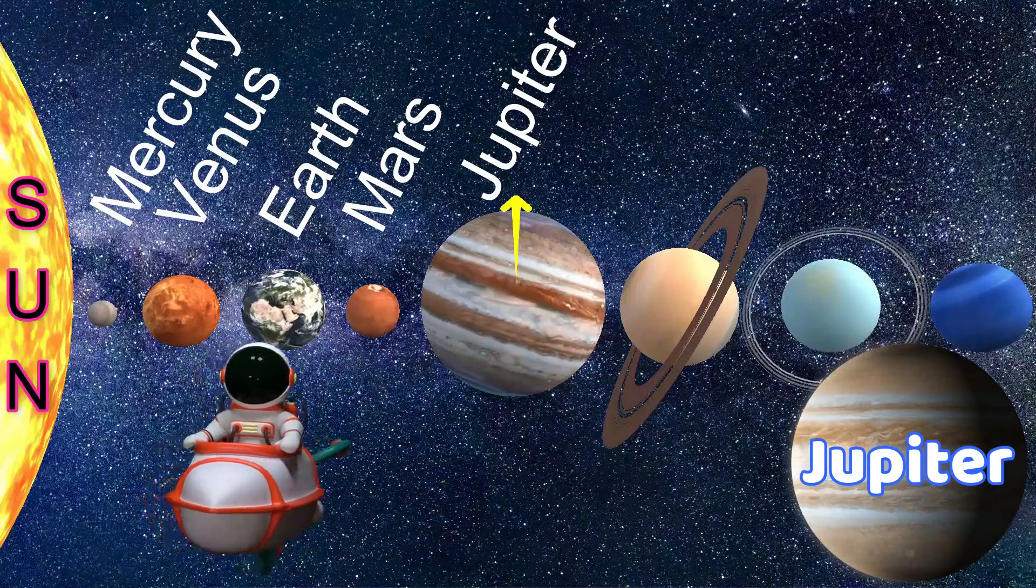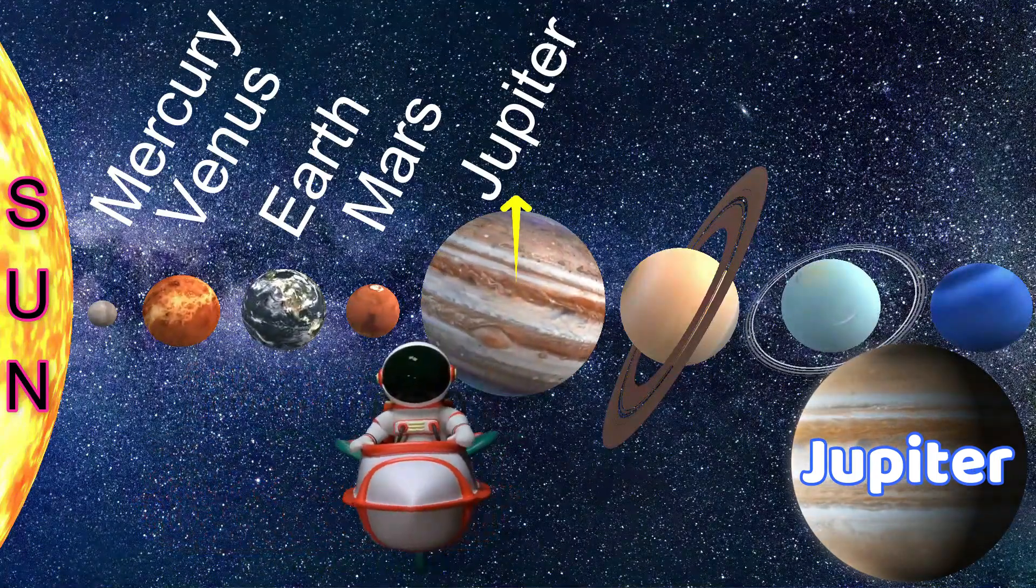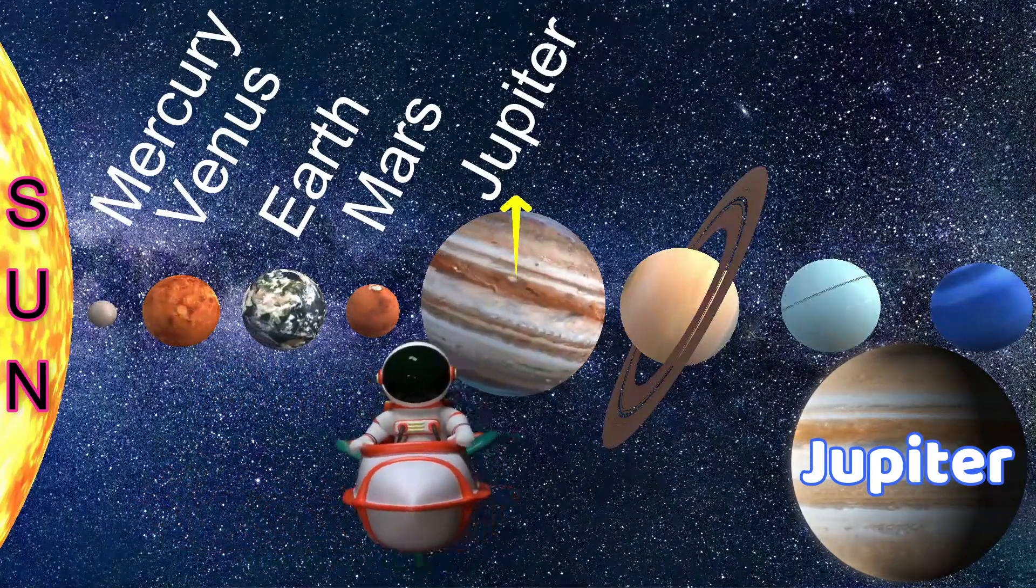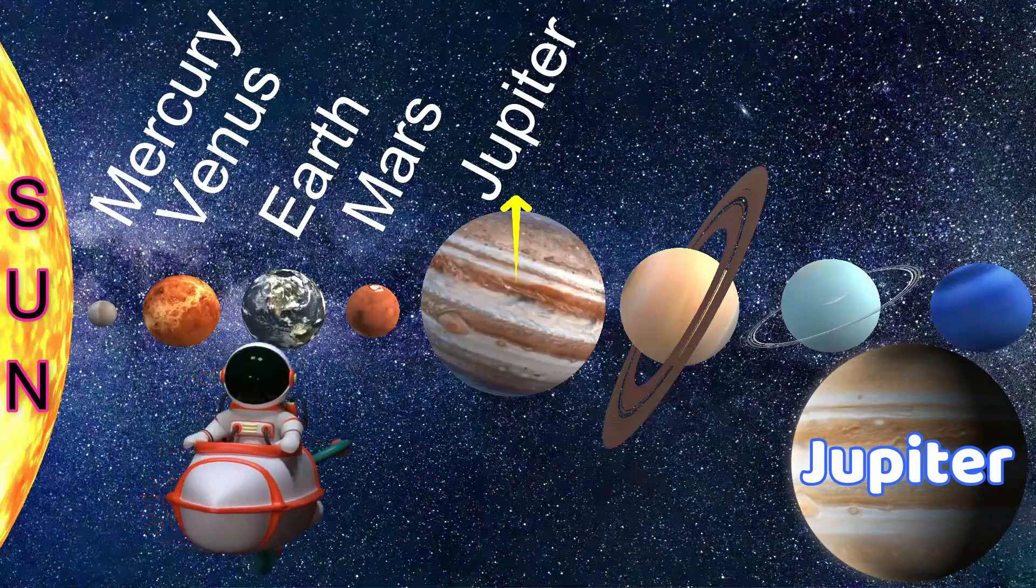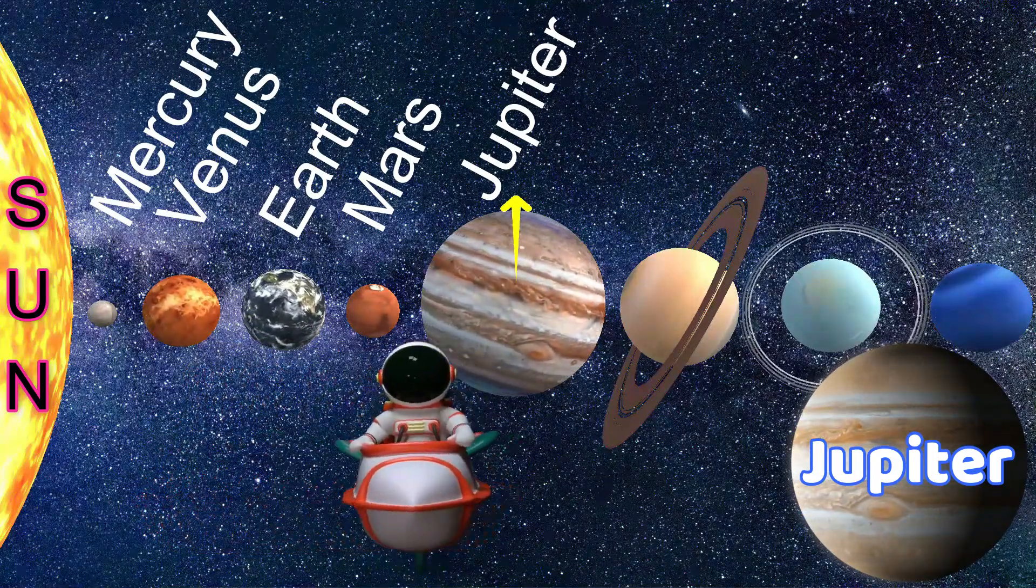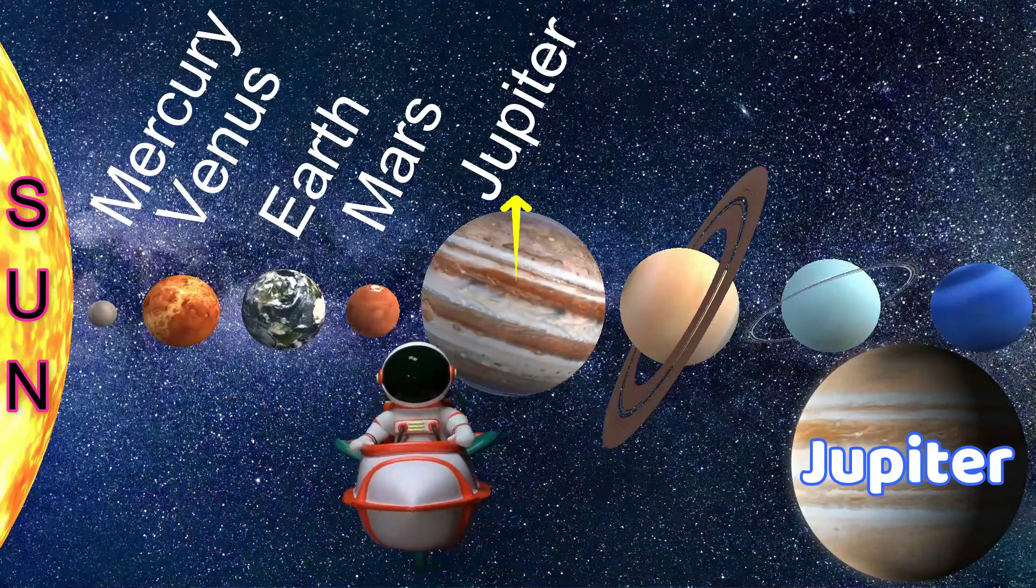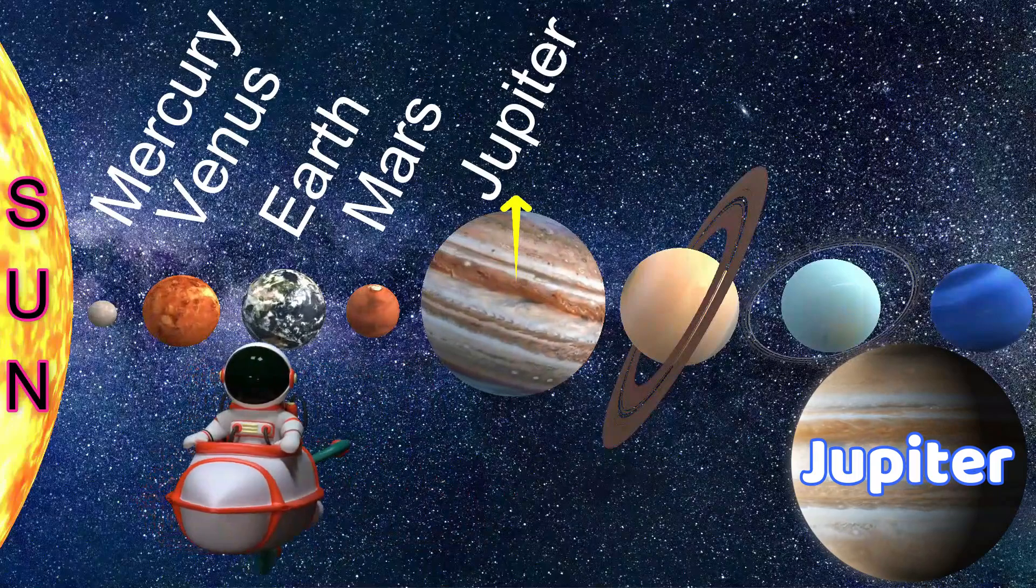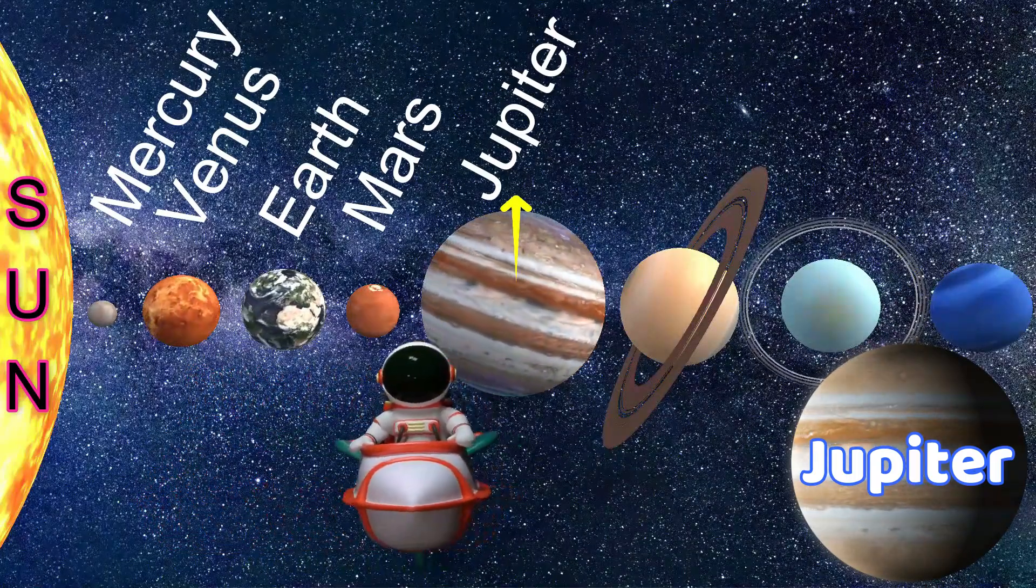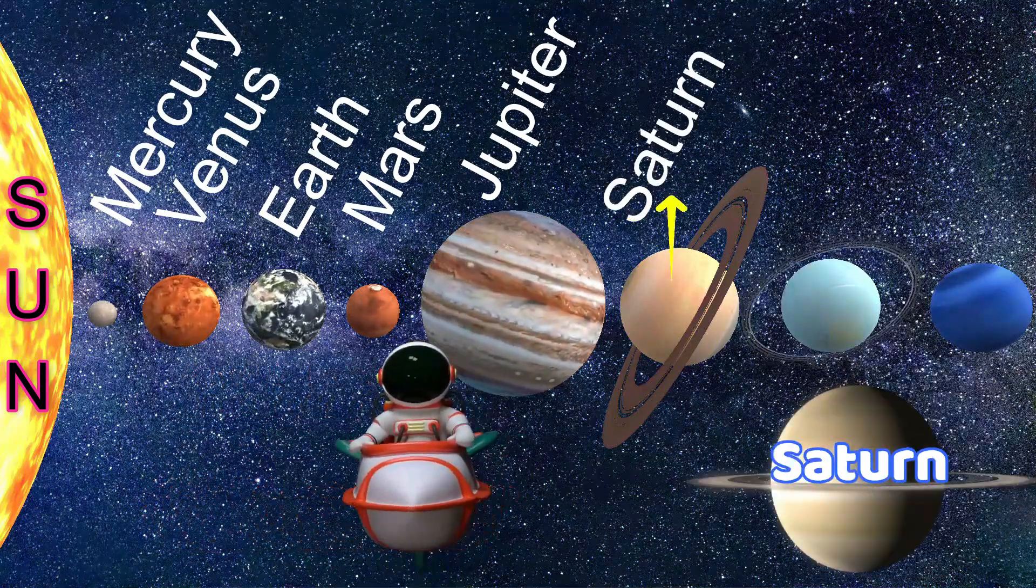Next planet is Jupiter, the largest planet of the solar system with the shortest rotation. In its atmosphere, hydrogen and helium gases are present. And this is the third brightest object in the night sky after the moon and Venus. Jupiter has 79 moons, friends. And it has an unclear ring around it.